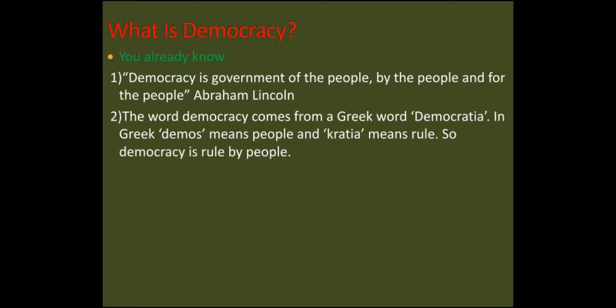Number two: the word 'democracy' comes from the Greek word 'democracia'. Etymologically yeh word Greek se aaya hai. In Greek, 'demos' means people and 'kratos' means rule. Greek language mein demos ke maane hain 'log' aur kratos ke maane hain 'rule'. So democracy means 'rule by people' — logun ki hukumat.